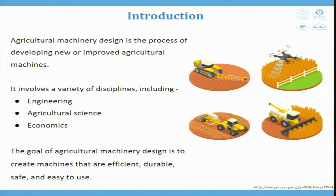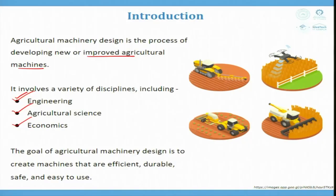Agriculture machinery design is a process of developing new or improved agriculture machines. It involves a variety of disciplines including engineering, agriculture sciences, and economics. Engineering includes mechanical design and software, as smart systems now monitor crop and farm health. Digital tools are being developed by IT and computer engineers.